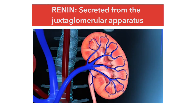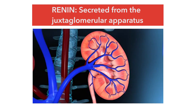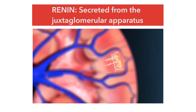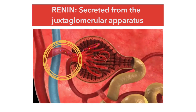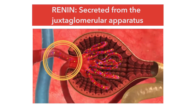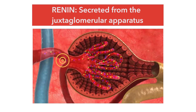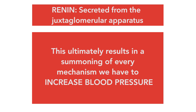Renin is a protein and an enzyme that is secreted from this portion of the kidneys right here — the juxtaglomerular apparatus. Think of renin as being the kidney's way of summoning a valuable stress hormone, a stress hormone that's critical in times of low blood pressure and critical in times of dehydration.